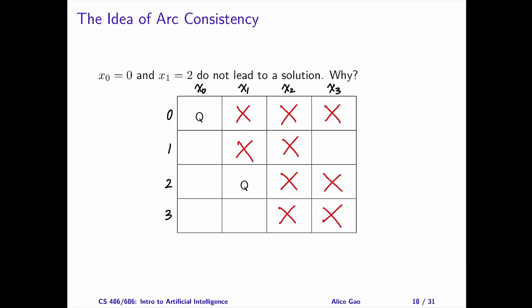Similarly, putting x1 in row 3 also does not lead to a solution. I will leave this as an exercise for you. This example illustrates the idea behind arc consistency. By examining each constraint, we can eliminate some domain values that cannot satisfy the constraint. Reducing the domains this way can get us closer to finding a solution or proving that a solution does not exist.